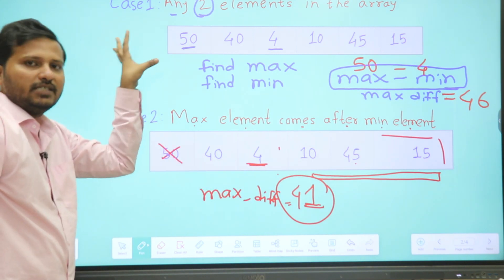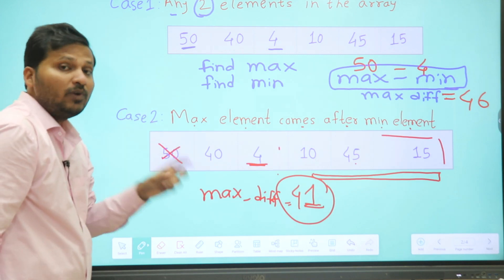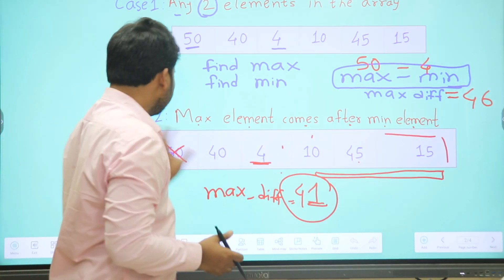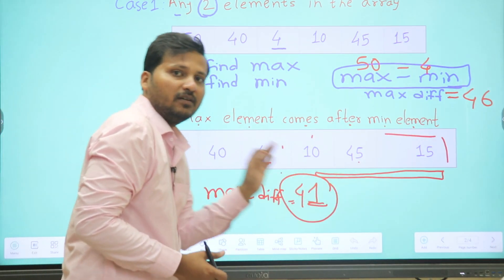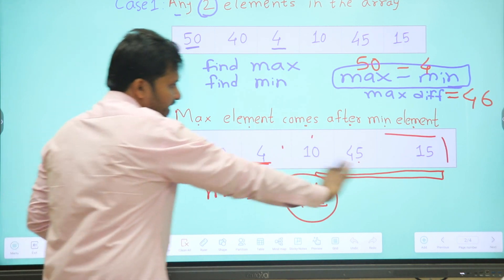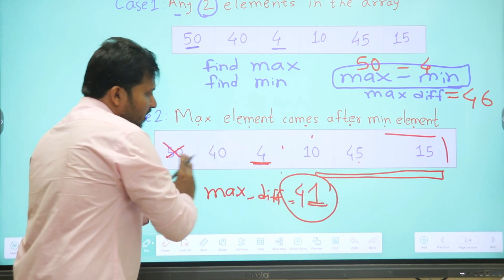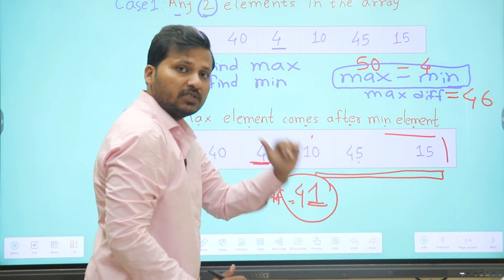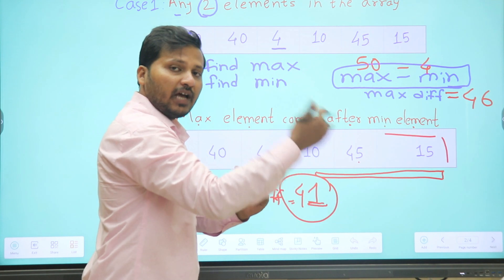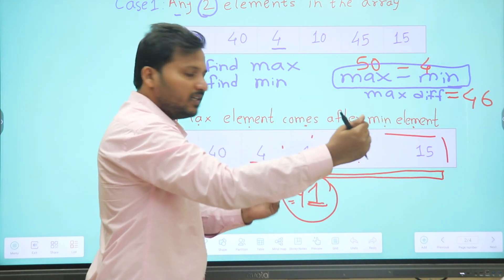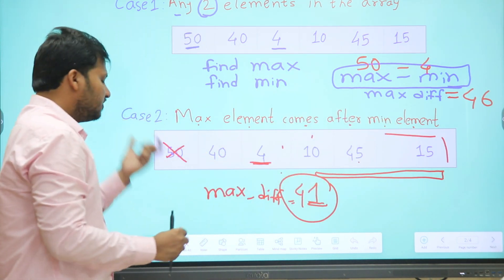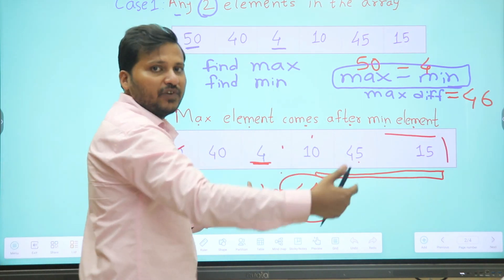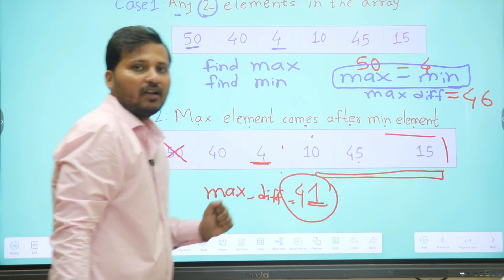Case 1 is straightforward, but Case 2 requires more thought - what logic do we use in the for loop? As we traverse the array, the minimum element keeps updating; we can find a new minimum further in the array, and then we need to search for the maximum element after that new minimum. So we must keep updating both the minimum element and the maximum difference.